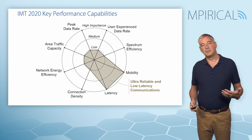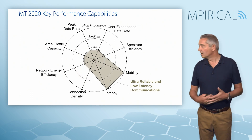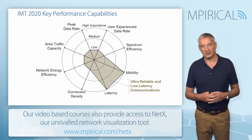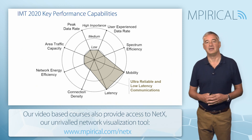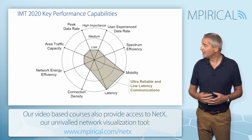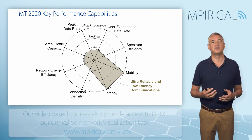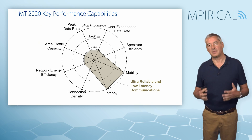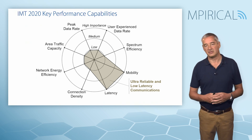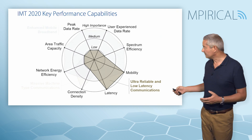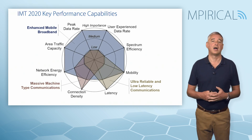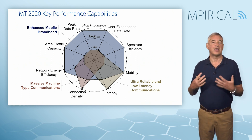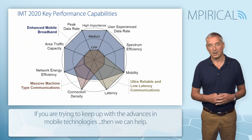Finally, for ultra-reliable low latency communications, mobility — if we're talking about autonomous vehicles — plays an important aspect, and latency, clearly by definition of the name. However, once again, peak data rate and user experience data rate are less important — we don't expect these devices to be sending large volumes of data frequently. So collectively, across our IMT 2020 network, we can see a real mixture against these eight criteria defined by the ITU-R.